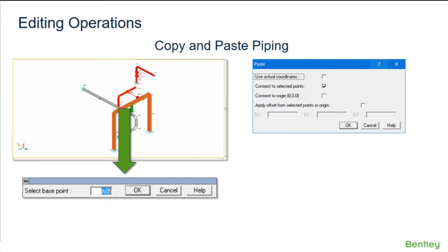After using either the cut or copy command to place a portion of the model on the clipboard, the paste command can be used to place those objects in any open model at a specified point. The points are renamed using the default naming conventions of the segment into which they're placed.